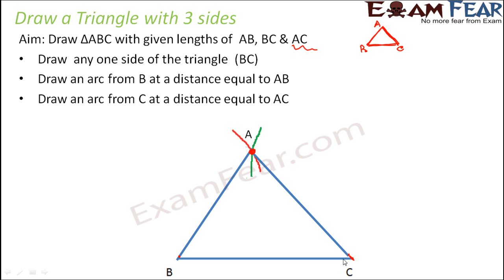When you know all three sides of the triangle, you draw one side and then for the other two sides, you draw arcs at a distance equal to the length of the sides. The point where the two arcs intersect is the third vertex of the triangle. This is how you draw a triangle when you know the length of all three sides.